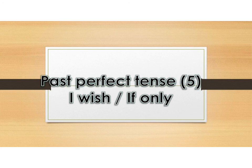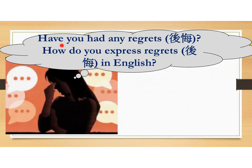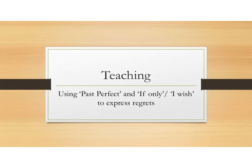Past perfect tense 5: I wish, if only. Have you had any regrets? 你们从来有没有一些后悔的东西呢? How do you express regrets in English? 究竟在英文你是如何可以表达后悔的呢? Using past perfect and if only or I wish to express regrets. 我们今天就会探讨一下用 past perfect tense 和 if only 或者是 I wish 去表达一个后悔的情况.